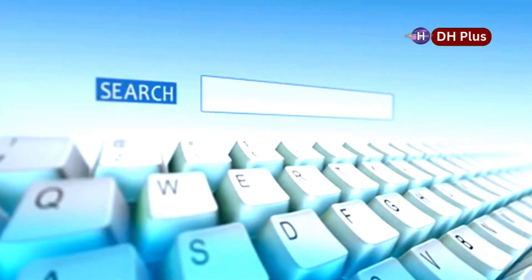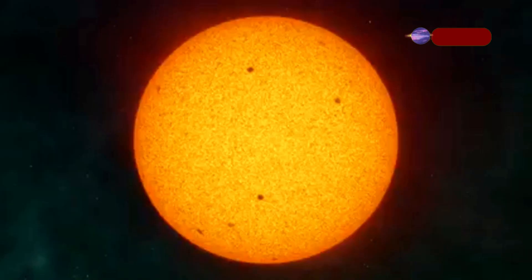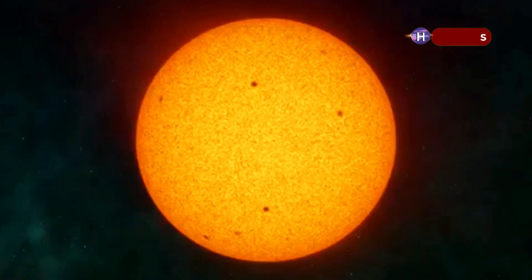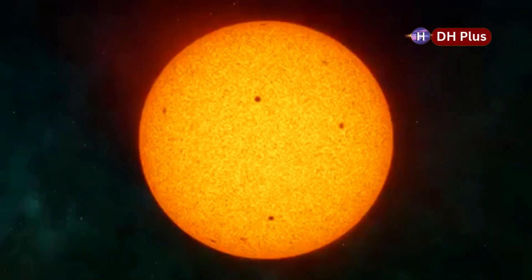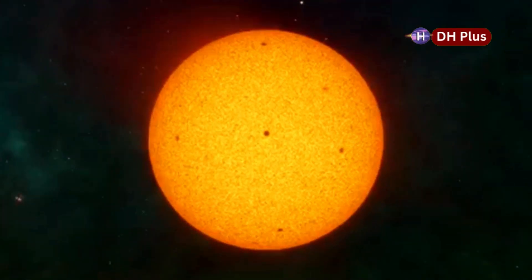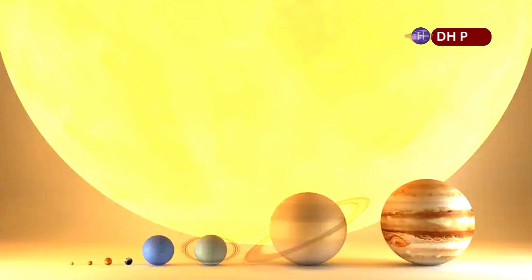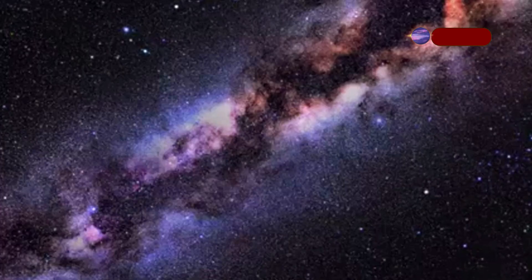If you type into Google, what is the largest star in the universe, you will receive pages of websites telling you it is UY Scuti, a red supergiant that just a few years ago was considered the largest star by physical size ever observed. It was originally measured to be around 1,700 times the size of the sun.